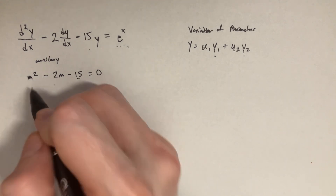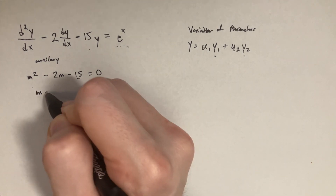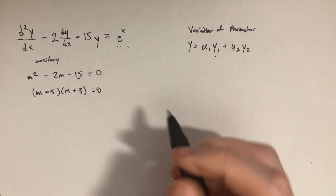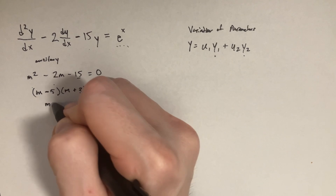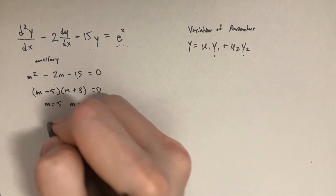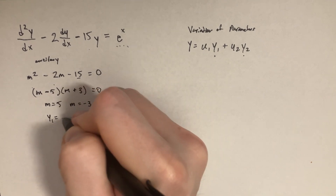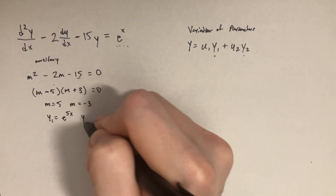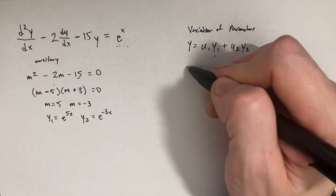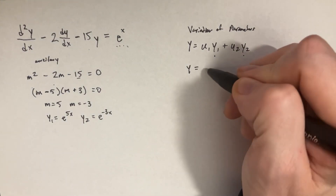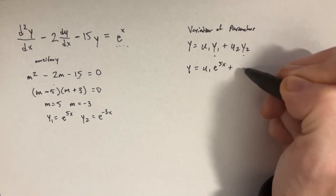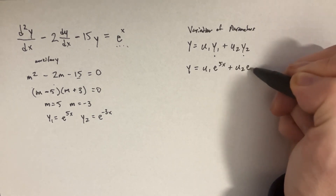This simplifies to (m - 5)(m + 3) = 0, which gives us m = 5 and m = -3. That gives us y1 = e^(5x) and y2 = e^(-3x). So far so good — that means we have y = u1*e^(5x) + u2*e^(-3x).